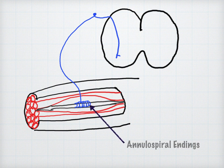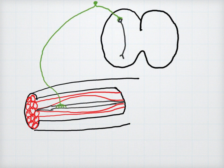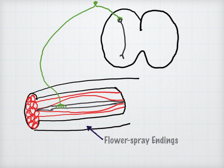which send proprioceptive information, specifically length and rate of change in length, to the spinal cord via group 1a afferent fibers. The second system consists of flower spray endings, which send proprioceptive information,